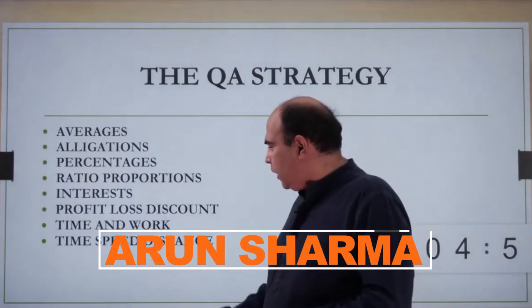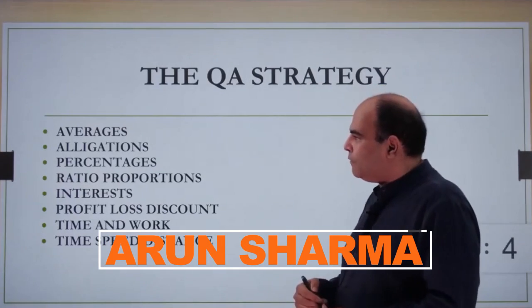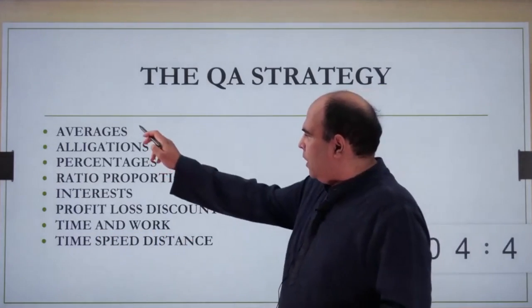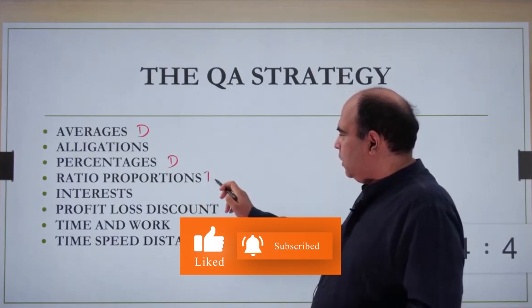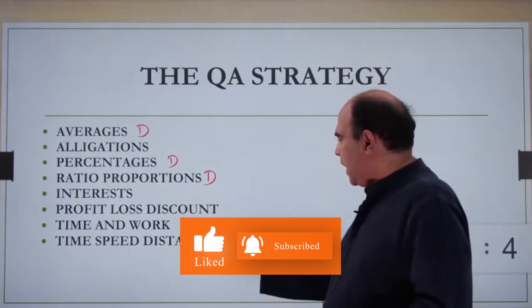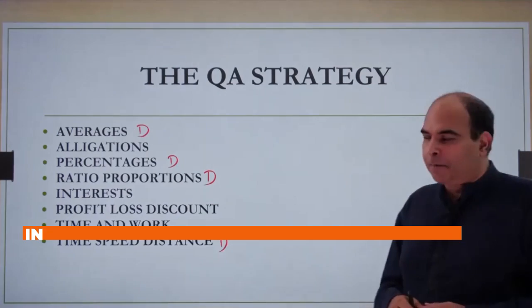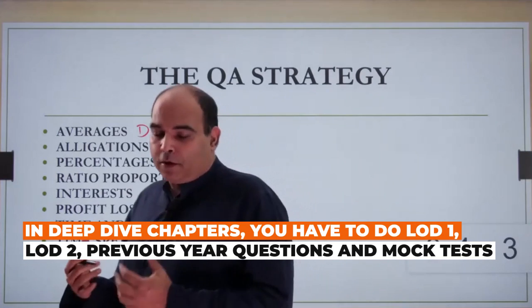Let's look at the chapters in Block 2-3. The deep dive chapters here are averages, percentages, ratio proportion, and time speed distance. These are the four deep dive chapters in this area where you have to do your LOD1s, LOD2s.